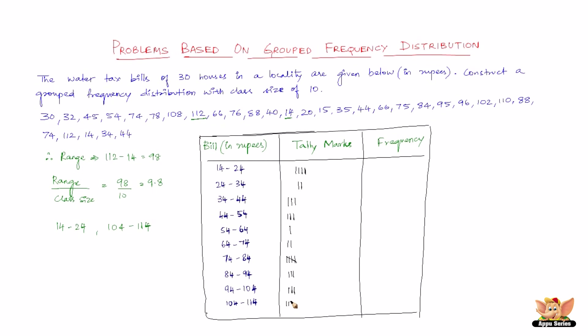We get four between 104 and 114. Let us write the frequency here: 4, 2, 3, 3, 1, 2, 5, 3, 3, 4 - which totals 30. So this confirms the total number of water tax bills.